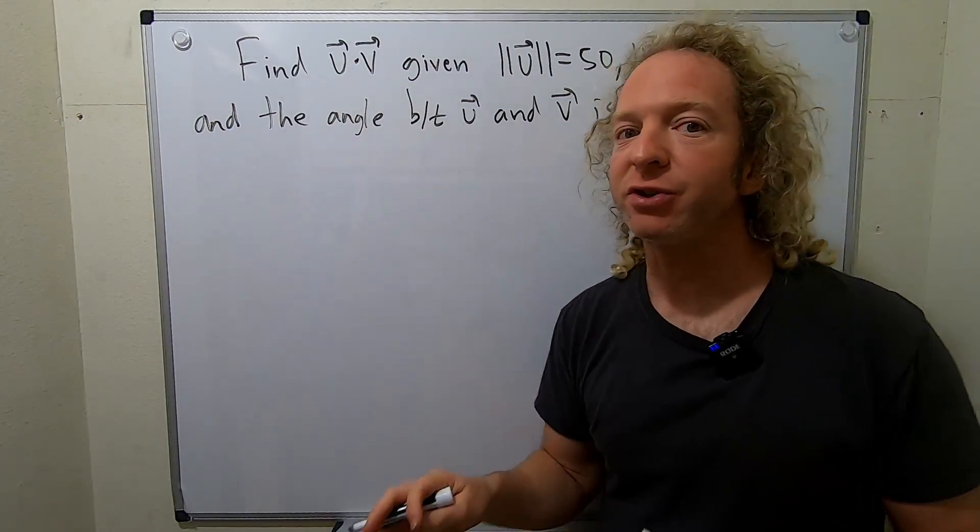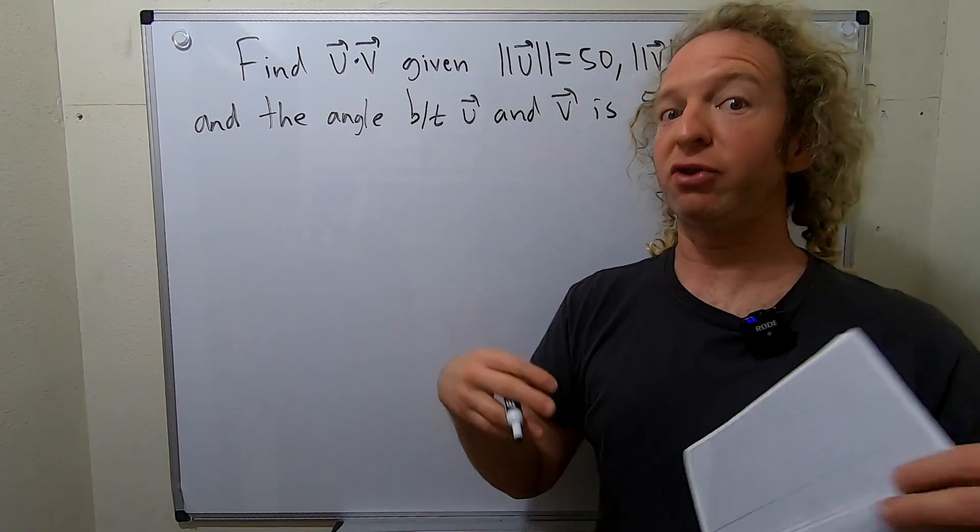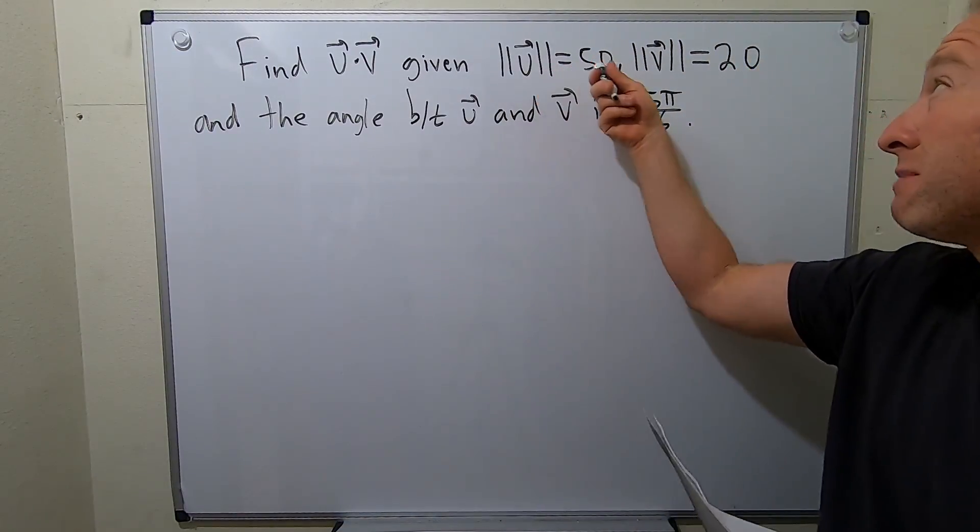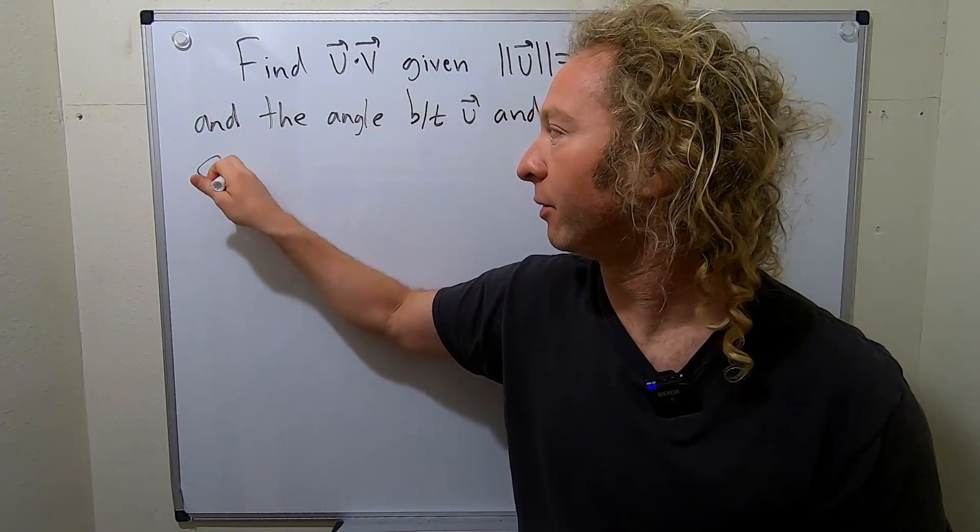So a little bit of an unconventional problem. Normally when you're asked for the dot product, you're given the vectors. In this case, we're just given the magnitudes and the angle between the vectors. So there's a way to do this using a formula.